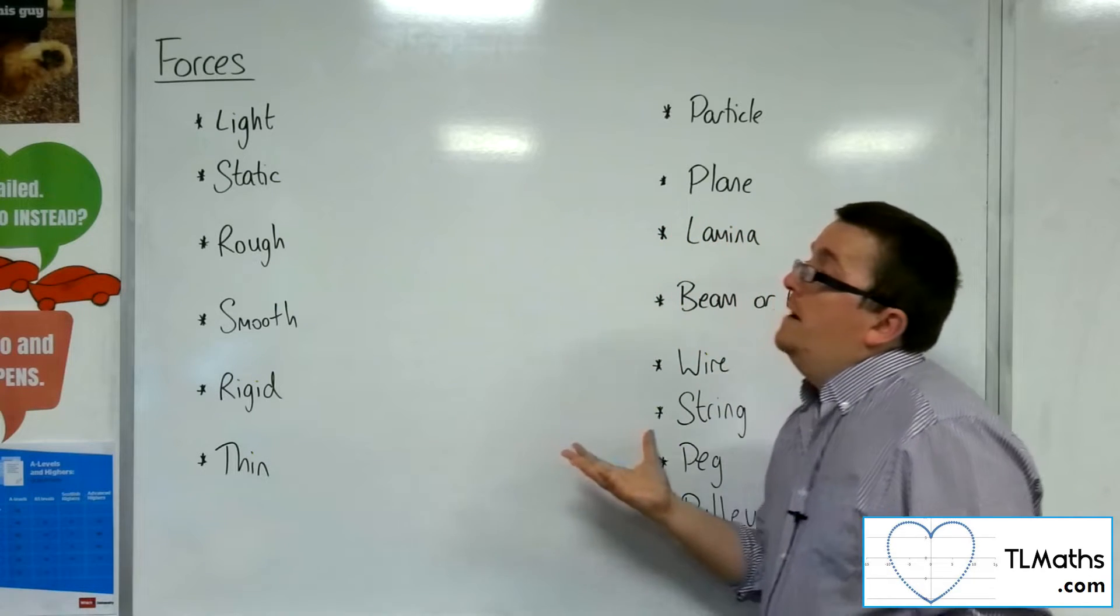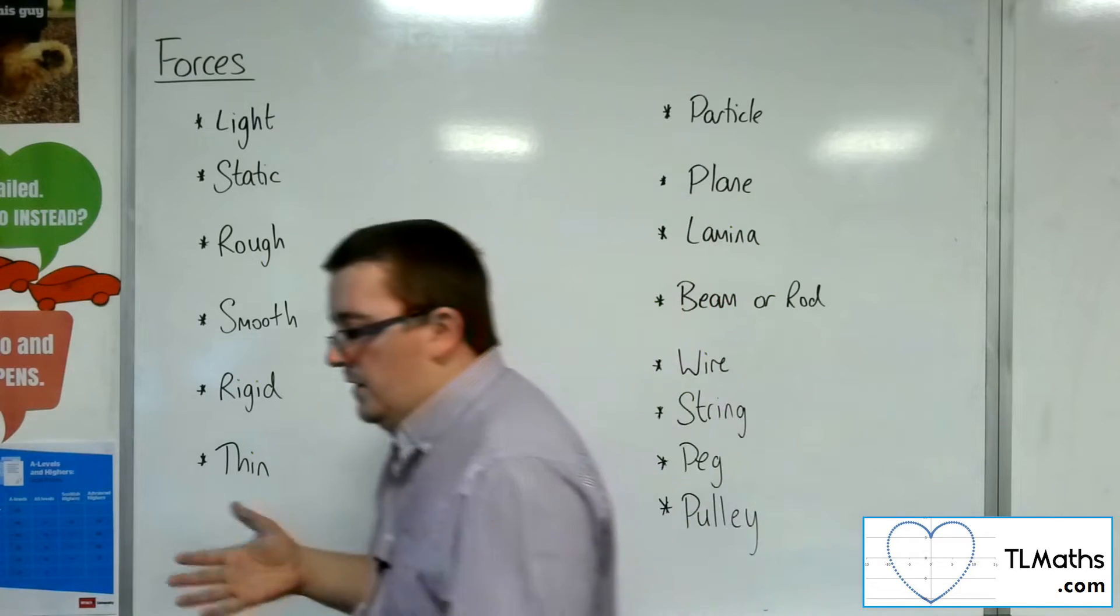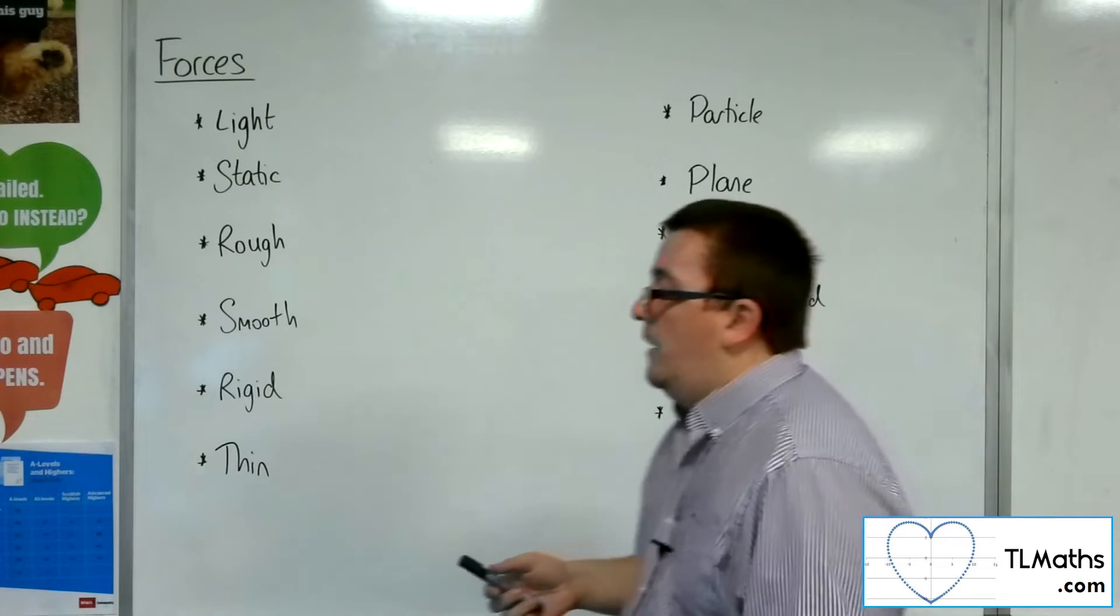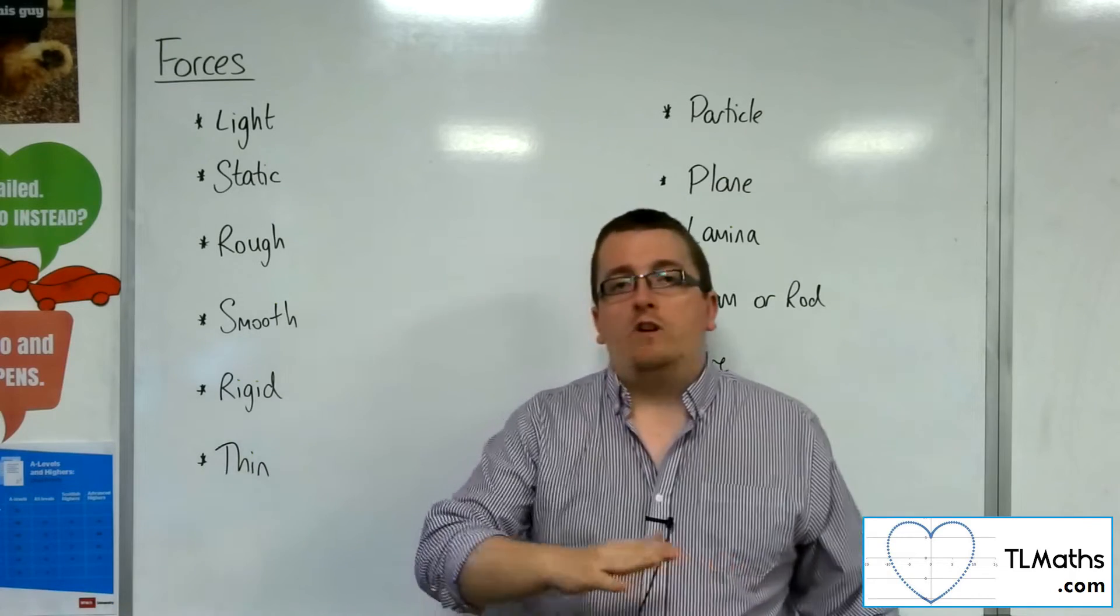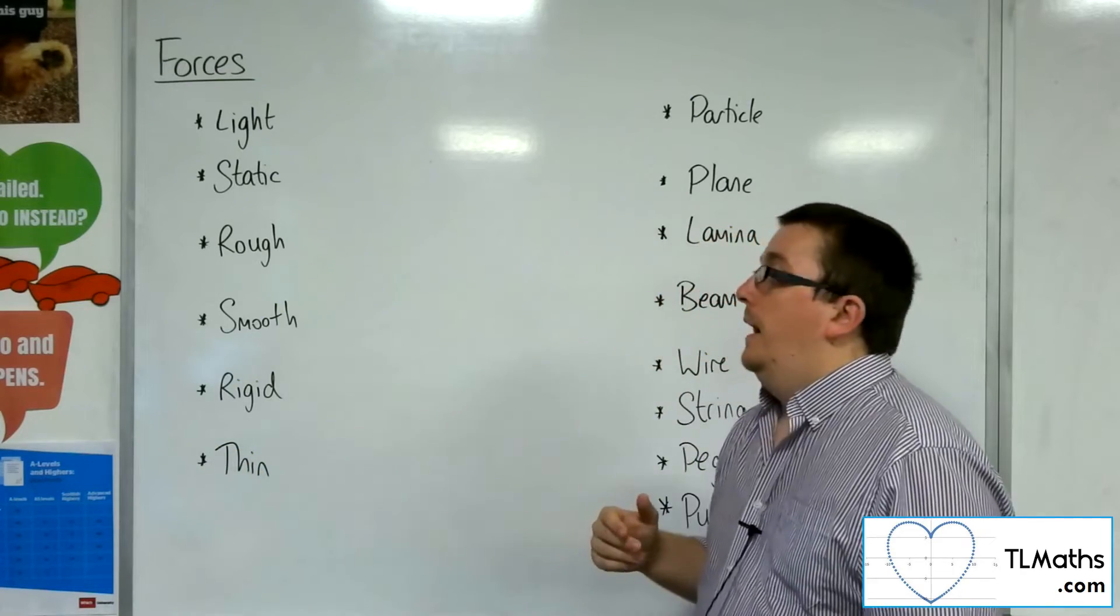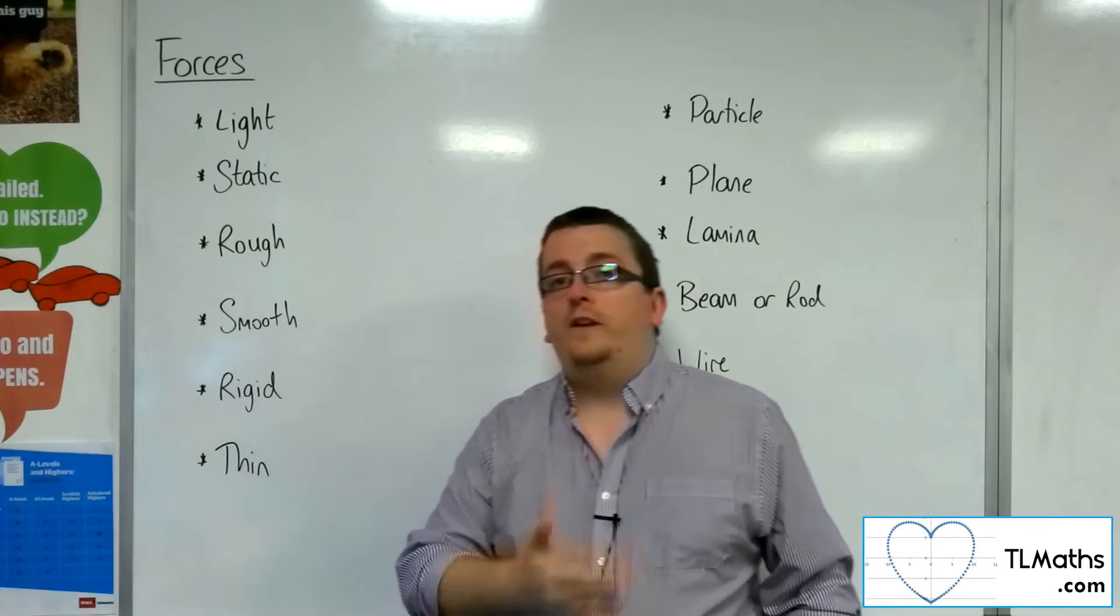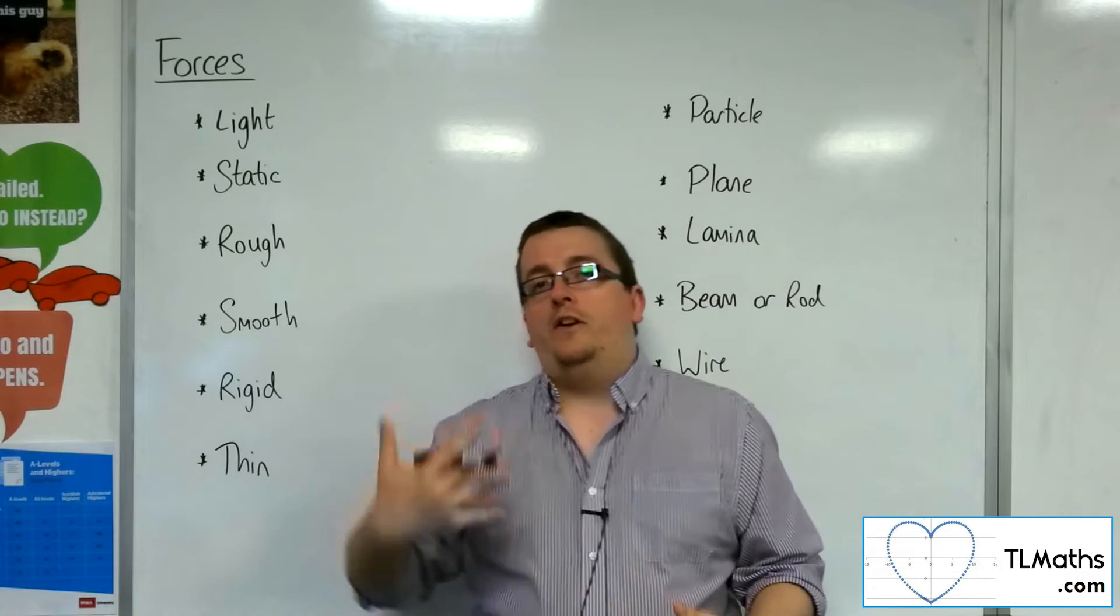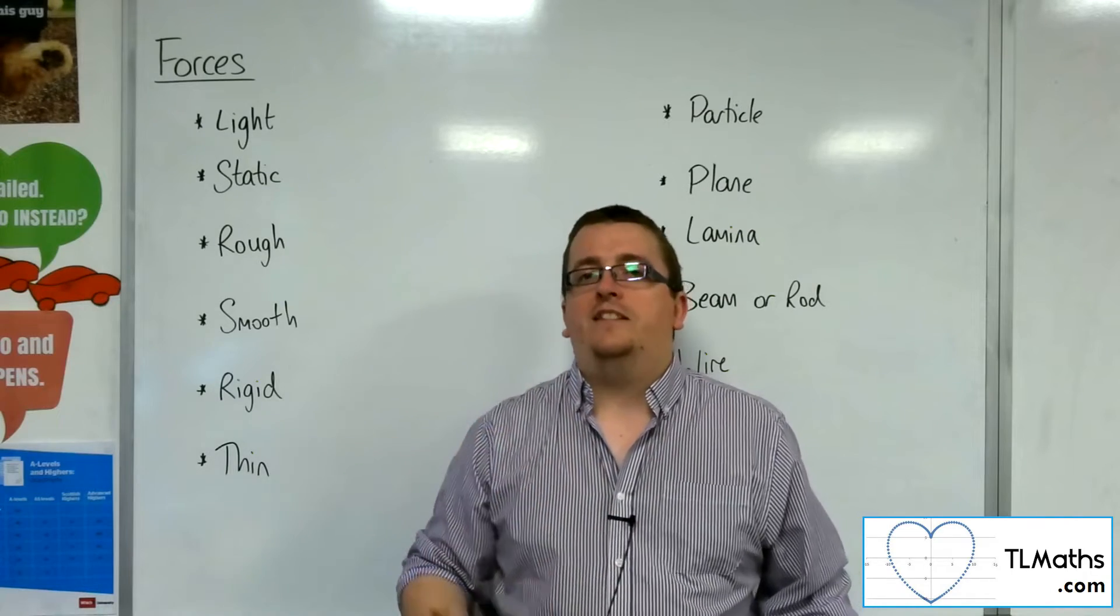Static would mean that it stays still. If you're static, you're in one place, the body's not moving. Rough. Now, different surfaces as you meet them, like a road or a carpet or the top of a tabletop, a wooden tabletop for example, will have different roughnesses. Blocks, if you are moving them across these different surfaces, will behave in different ways. A surface that is considered to be rough means that there is friction working against the object.